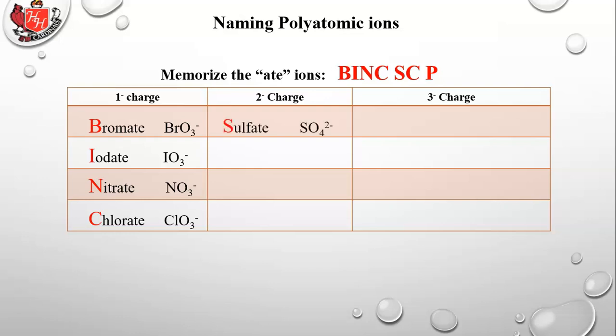The two minus charges are sulfate, that's SO4 2-, carbonate, CO3 2-. So that's the SC. Just think of Southern California. And finally, there's only one 3- charge. This is PO4 3-. So BINC, SCP. However you can remember that. The only thing you got to keep straight is the chlorate from the carbonate. The chlorate is the 1- and the carbonate is the 2-.